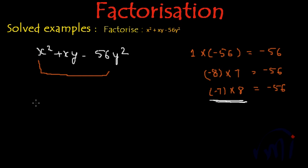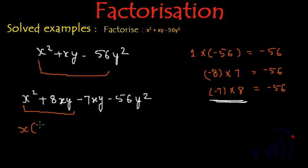So this expression can be rewritten as x² + 8xy - 7xy - 56y². And now from these two terms I am going to take x as common. So inside the bracket we will have x + 8y, and from these two terms if I take minus 7y as common, again inside the bracket I will have x + 8y.